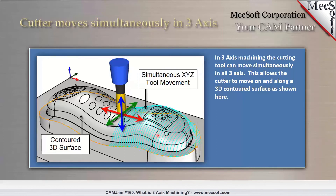Three-axis refers to three linear axes: the X-axis, which runs typically left to right, the Y-axis runs back and forth, and then the Z-axis up and down. If you take a look at this slide, you will see that the X-axis is represented by the red arrow, the Y-axis is represented by the green arrow, and then the Z-axis is typically represented by a blue arrow.